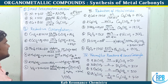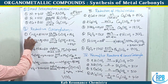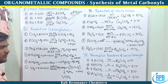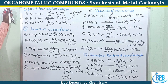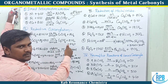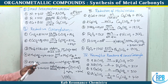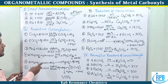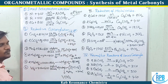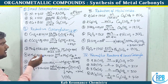The second method is reductive carbonylation, which proceeds via a reduction mechanism. Starting from metal halides, metal acetates, metal chlorides, or metal carbonates, we obtain metal carbonyls. For example, chromium trichloride (CrCl3) treated with aluminium under carbon monoxide produces Cr(CO)6 — also an 18-electron complex — along with elimination of the Lewis acid AlCl3.